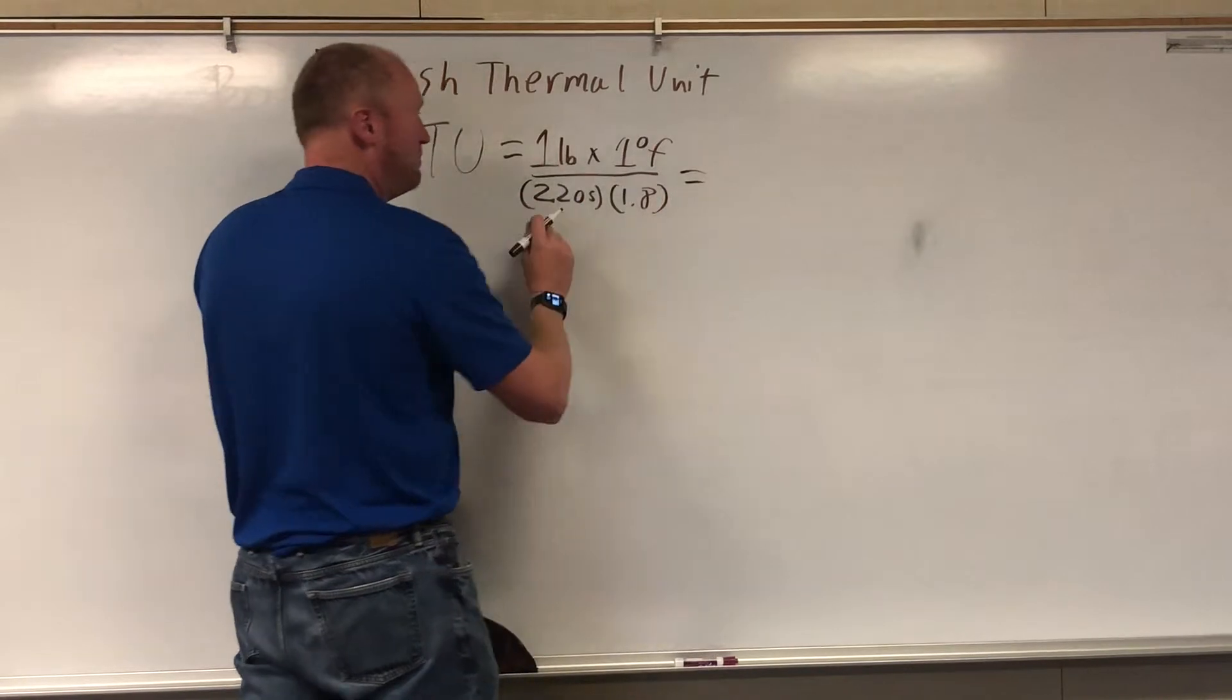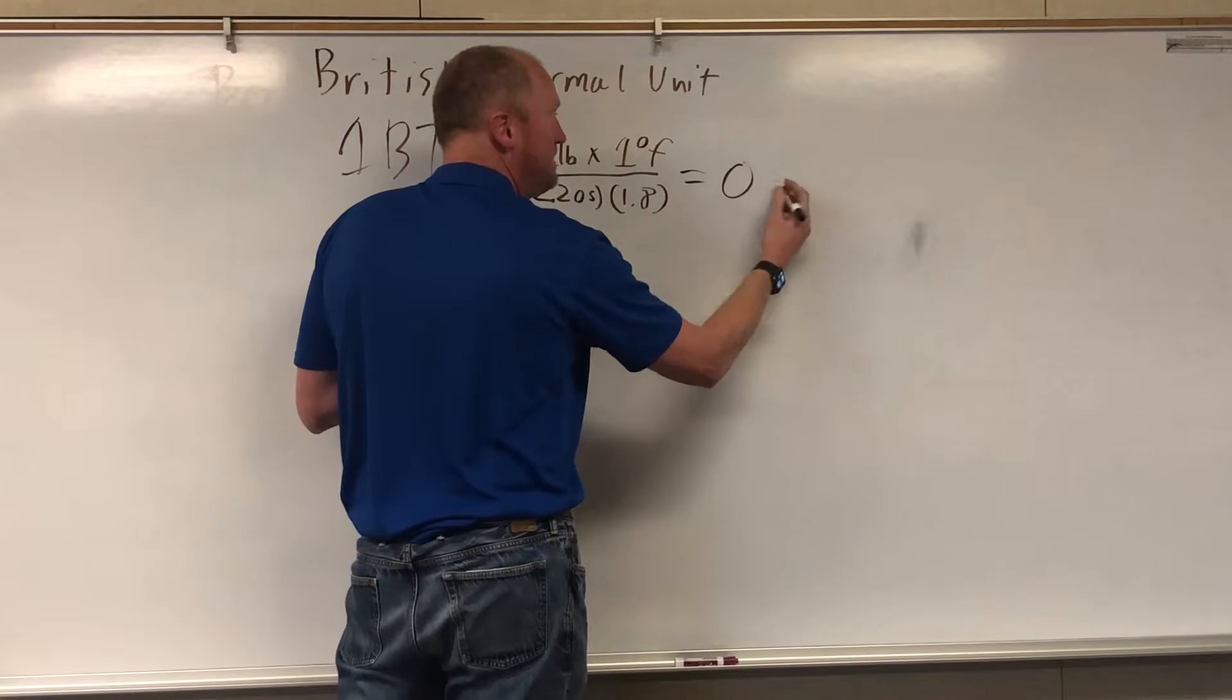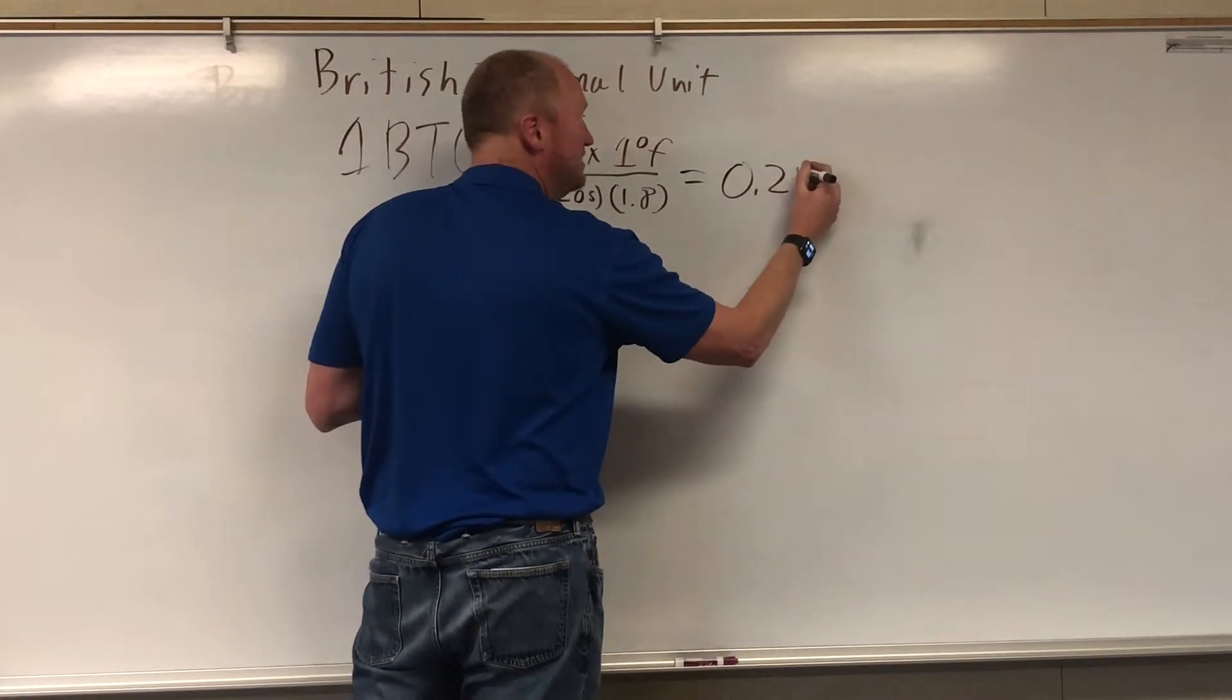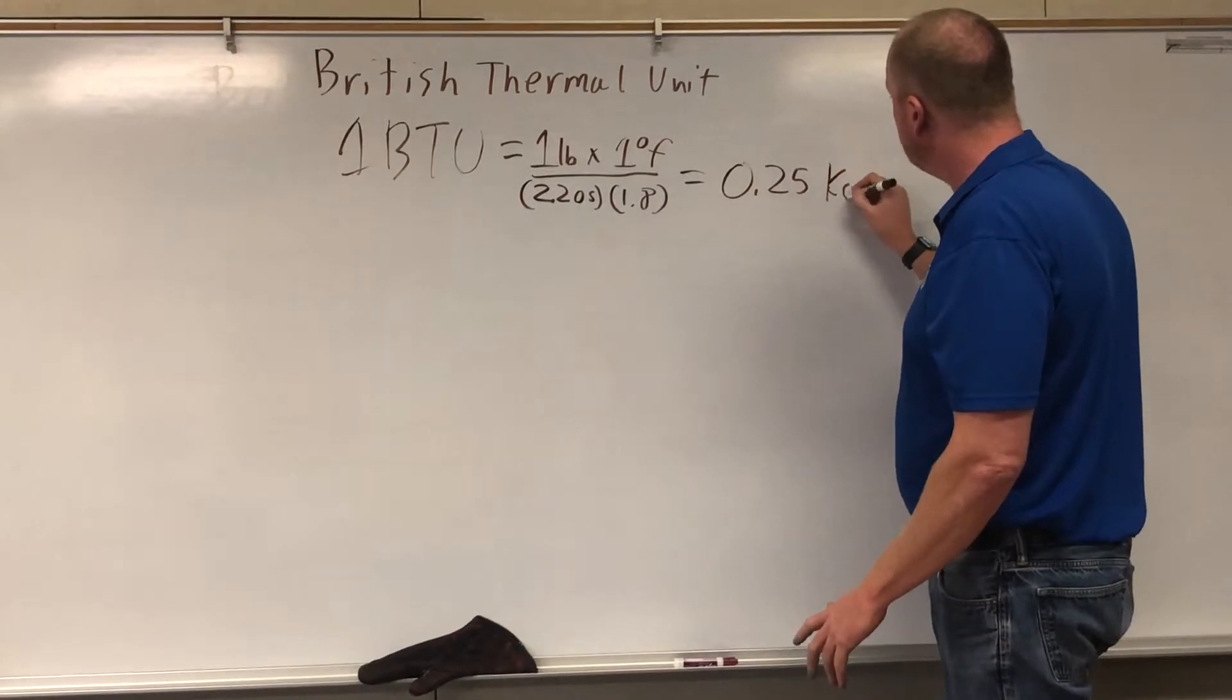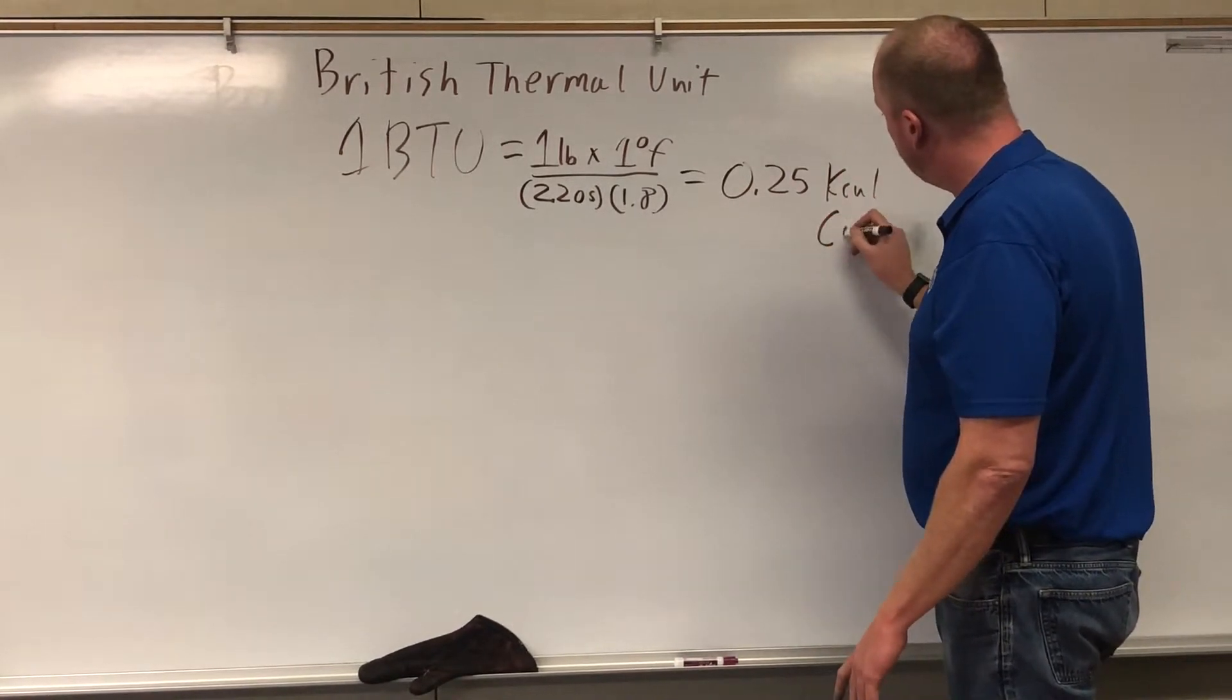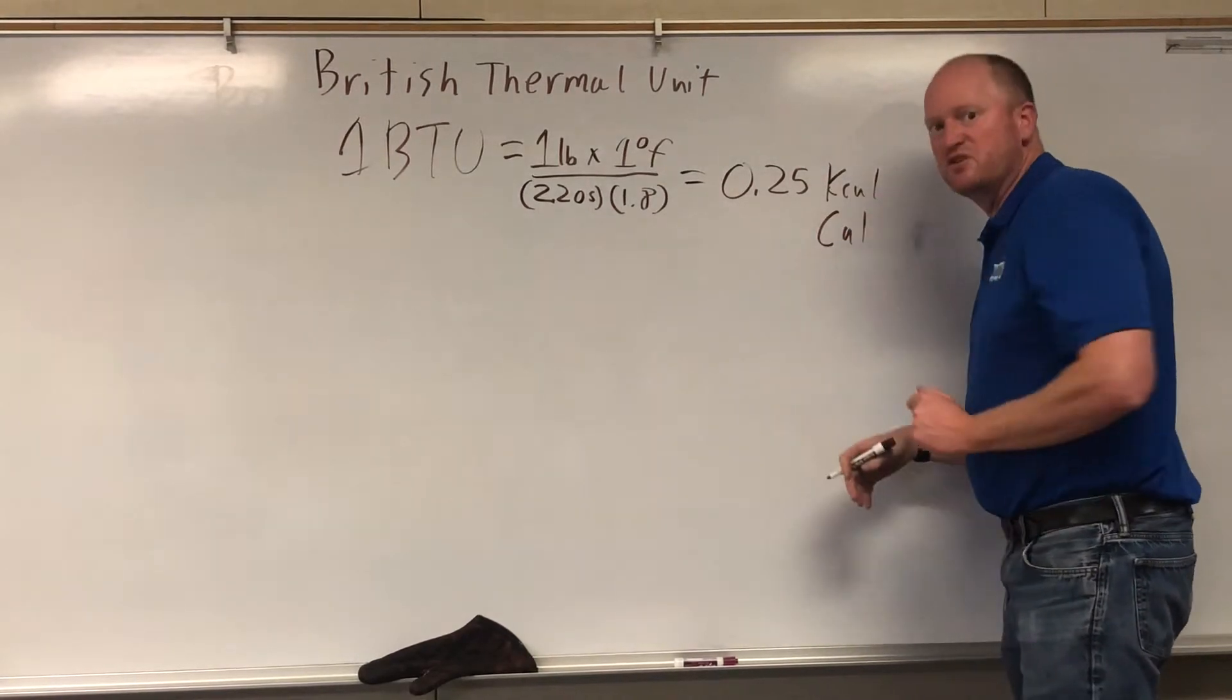So anyway, divide by 2.2, divide by 1.8, and you get that 1 BTU is roughly equal to 0.25 kilocalories, or if you're in America, Big Cals, capital - it's an American thing, dietary calories if you want.